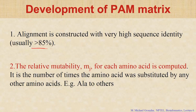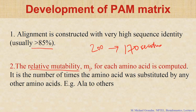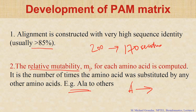They usually use sequences with more than 85 percent sequence identity. If you have 200 residues, a minimum of 170 residues should be aligned. Then they get the changes and see how far the changes happened. To construct the matrix, first you check the relative mutability — for a specific amino acid residue, say alanine, how frequently is it mutated to other residues, or any of the other 19 residues?